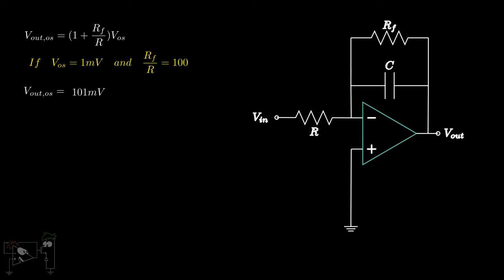RF and 1 by SC appear in parallel as the feedback impedance. Hence, Vout by VIN is equal to minus RF parallel 1 by SC upon R. A little simplification gives us minus RF upon R, into 1 by 1 plus SRFC.